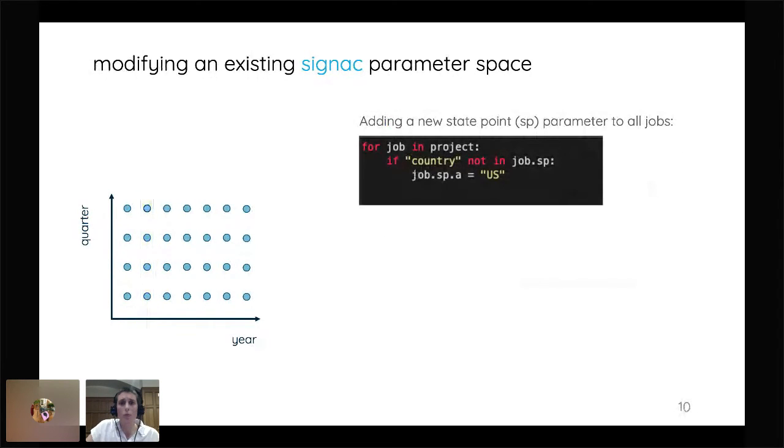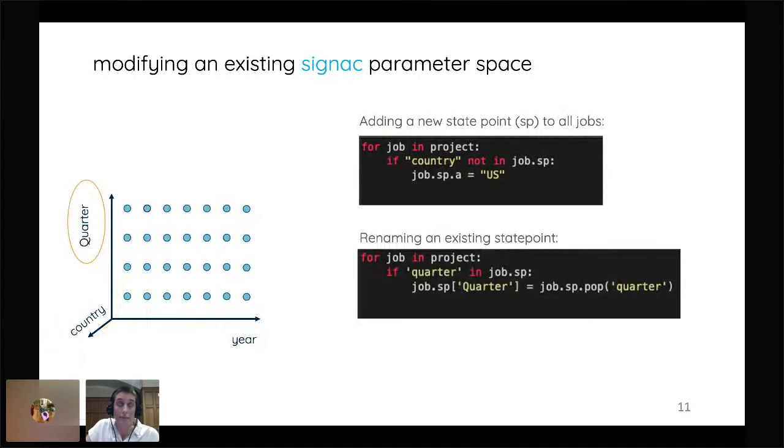And then when we want to modify a workspace, this is where SIGNAC is actually very powerful because it allows you to modify it while maintaining the integrity of your data. So if we want to add country as another parameter, we can just iterate for all of the jobs and add another parameter. You can also re-exist and rename an existing state point if we decide that now we want to capitalize quarter, for example. But you see how this could be very useful if we want to change to a different naming convention and not worry about invalidating any of your data.